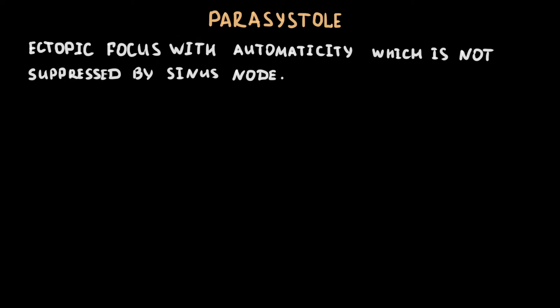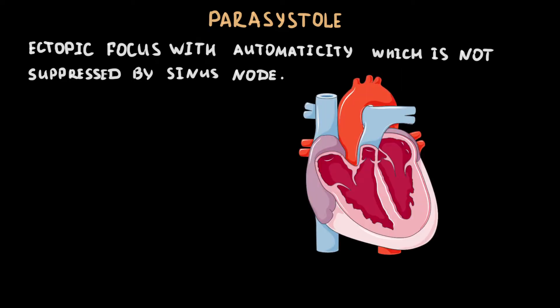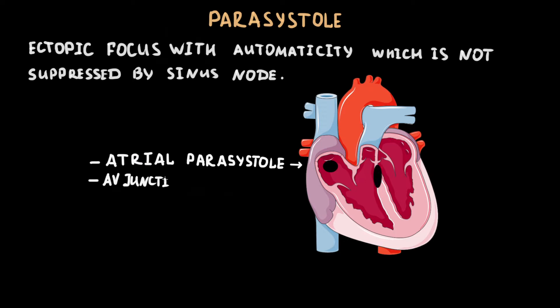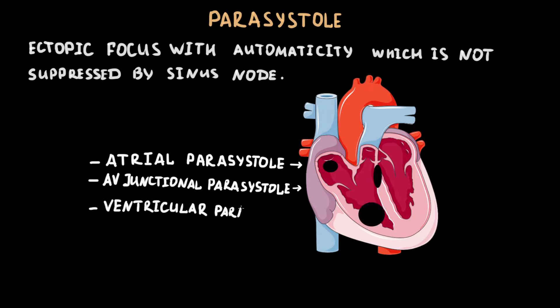Parasystole is an ectopic focus with automaticity in the heart, which is not suppressed by the sinus node. According to the locus of parasystole, it can be atrial or AV junctional, but the most common situation is ventricular origin. In this video we will speak only about ventricular parasystole.